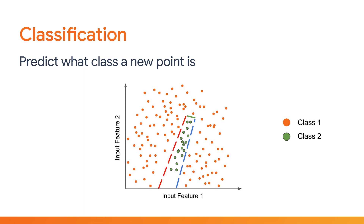And what about this slightly more extreme example with a lot more data? It's the same principle really, and with enough neurons and layers, you can potentially train a system to learn some very complex and intricate classifications. In the example shown here, for a new given recording, if it's contained within these lines, it's a class 2, and if it's contained outside, then it's going to be class 1.